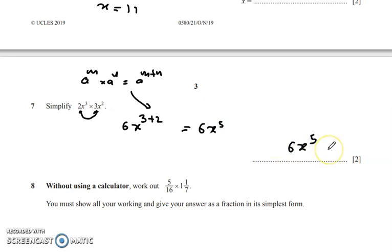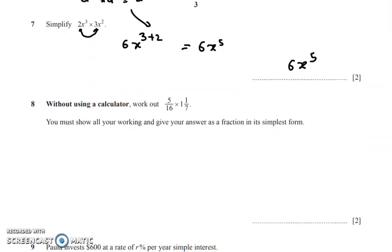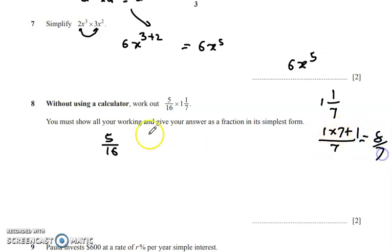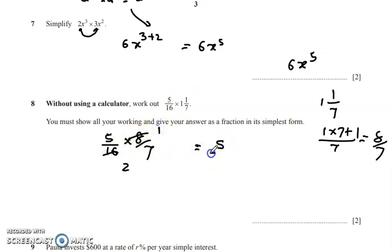Question 8: without using a calculator, find the value of 5/16 × 1¹⁄₇. Converting the mixed fraction: 1¹⁄₇ = (1×7 + 1)/7 = 8/7. So we calculate 5/16 × 8/7. Simplifying: 8 and 16 cancel to give 5/14. This is the simplest form as there is no common factor.